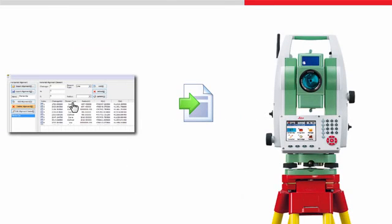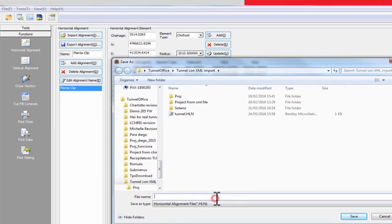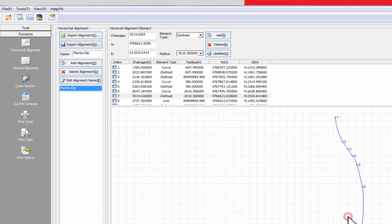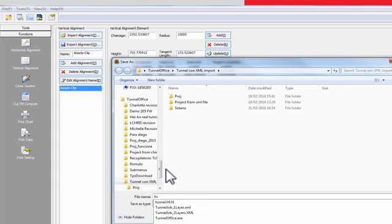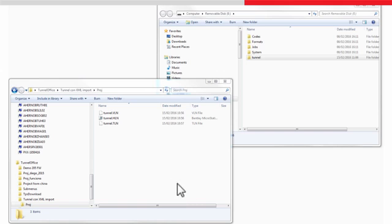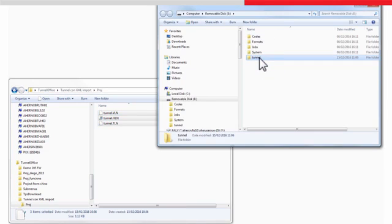To upload your tunnel projects to the total station, you can use the data exchange tool, which is included in the office software, or transfer the files via a USB stick. Let's see how to upload the files via a USB stick. Go to horizontal alignment, then export alignment. Save the horizontal alignment with the name Tunnel. The correct file extension gets added automatically. Now repeat this for the vertical alignment and the cross section, creating three files with different extensions. Next, copy these files to a folder called Tunnel on the USB stick and insert this into the instrument.